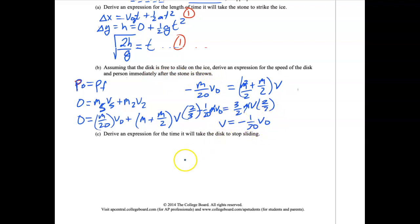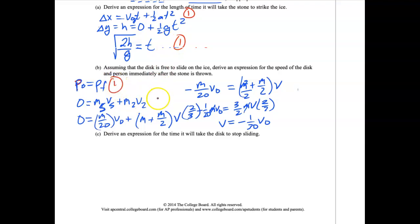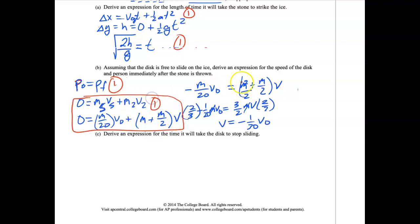The speed of the stone is VO and the speed of the person and disk is 1/30 VO. Conservation of momentum is really important here — writing the original equation is worth one point, and doing all the algebra to get the correct final answer is another point.